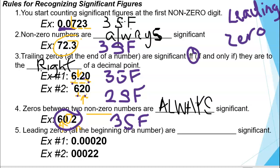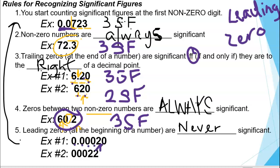The last rule says that leading zeros — zeros that are at the beginning of a number — are never significant. Any leading zeros are non-significant, which goes right back to rule number one: we start counting significant figures when we hit the first non-zero digit. So all these zeros here are not significant. In our example, we start counting at two, so we have one significant figure. Then we have a trailing zero, but it is to the right of a decimal point, so it is significant. So we have two significant figures.